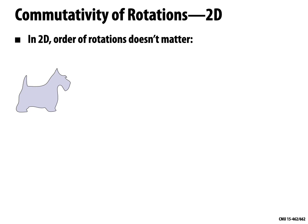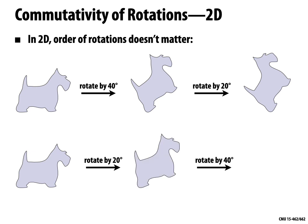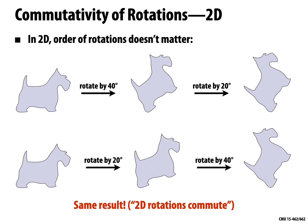For instance, if I have Scotty and I want to rotate him by 40 degrees and then rotate him by another 20 degrees, that's exactly the same as first rotating by 20 and then by 40. In both cases I've just rotated by a total of 60 degrees. It really feels like in 2D we just have this one angle — every time we rotate we're adding or subtracting from this angle. It doesn't matter what order we do things in. We'd say that 2D rotations commute, or if you want to be really fancy, 2D rotations are abelian.